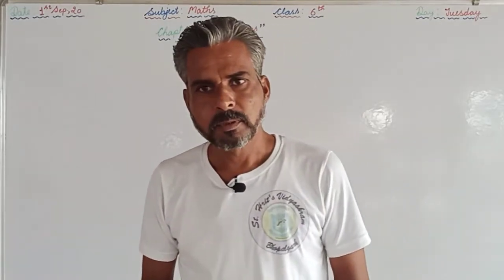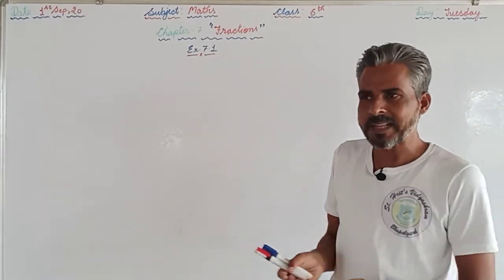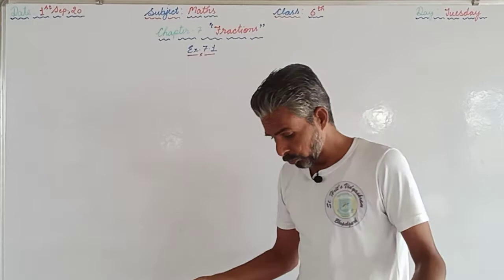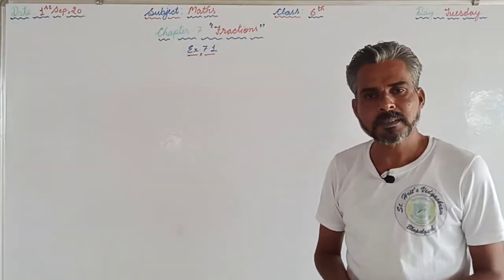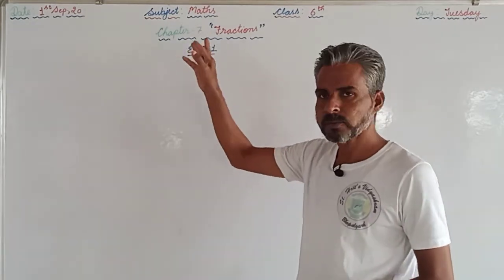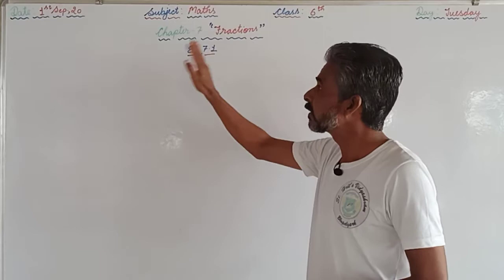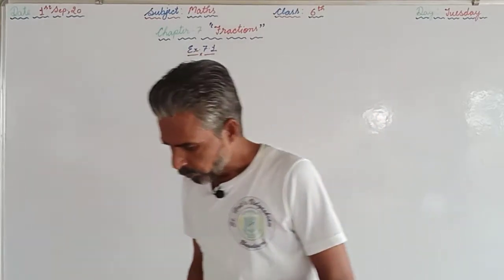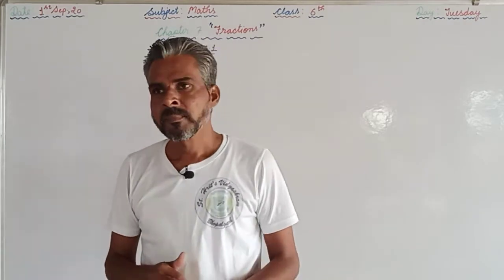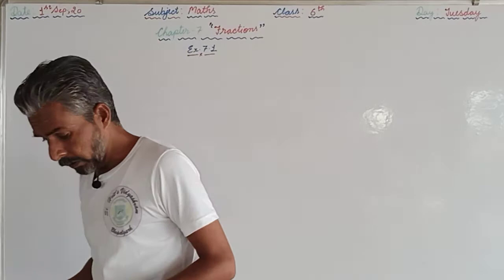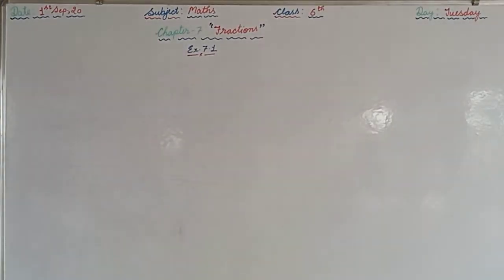Welcome back to our school's YouTube channel. Today's video is for Class 6, subject Math. We are starting Chapter 7, Fractions — note that yesterday we mistakenly wrote Chapter 6, but it is correctly Chapter 7. Yesterday we discussed the definition of fractions, types of fractions — improper, proper, like, unlike, and mixed fractions — and we completed Questions 1 and 2 of Exercise 7.1. Today we will discuss the remaining questions.